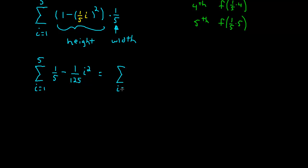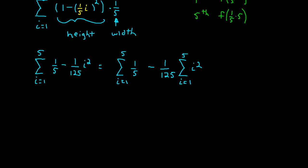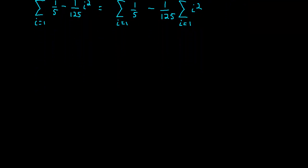I have the sum from 1 to 5 of 1 fifth, and then I'm going to make the second part its own sum and pull the constant 1 over 125 out in front — that's a legal property of sigma — leaving i squared inside. The sum of a constant going from 1 to n is simply the product of those two numbers, so this sum equals 5 times 1 fifth, which is just 1.